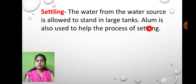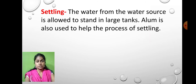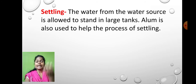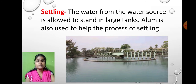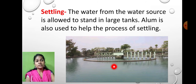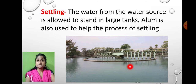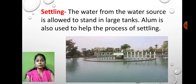Most of the time, alum — called 'turti' in Marathi — is added to the water. When alum is added, it takes the impurities and causes them to settle at the bottom, leaving the upper portion of the water clean. As you can see in the diagram, the water on the upper surface of the tank is safe and drinkable. This process is called settling.